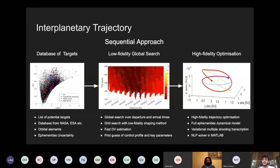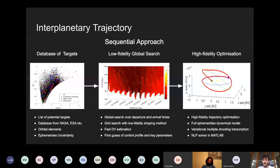We are looking at both high-thrust and low-thrust options because, as I will show later, this will be an important choice in the close proximity of the asteroid during the flyby. The third and last step is the high-fidelity optimization: the best targets from the previous step are taken and we perform a high-fidelity trajectory optimization in a full ephemeris dynamical model. We plan to use a non-linear programming solver in MATLAB so we can rerun this analysis whenever we want with slightly different parameters.